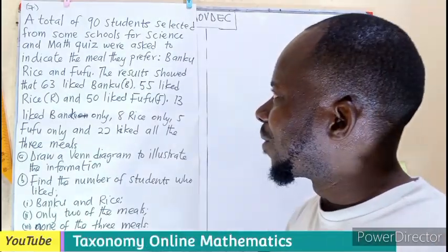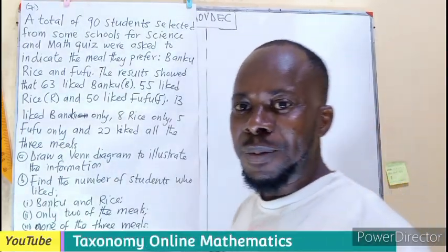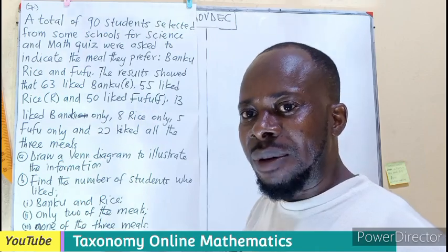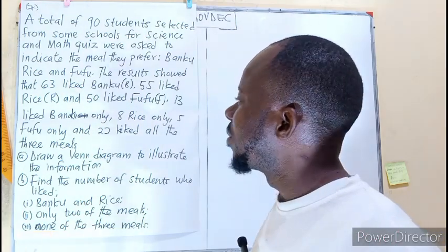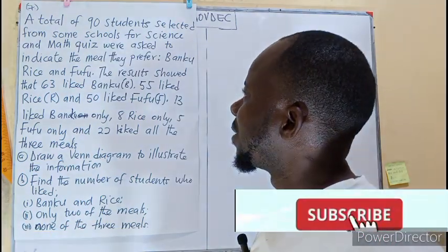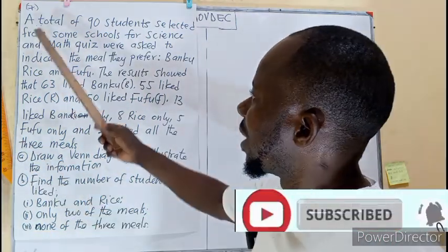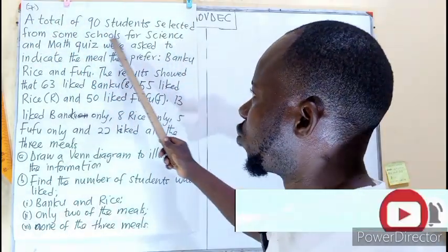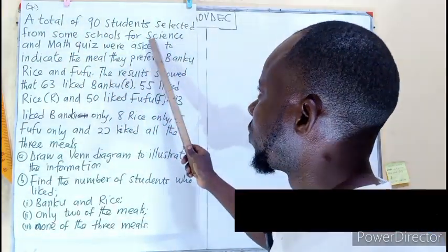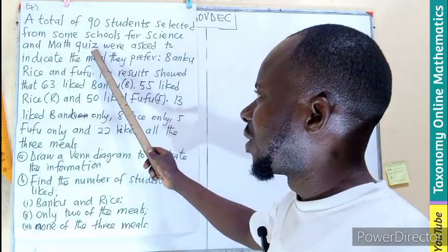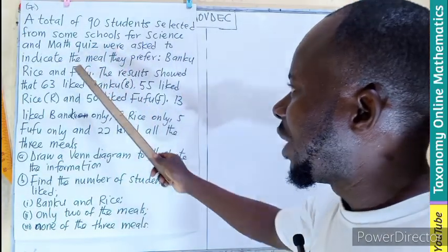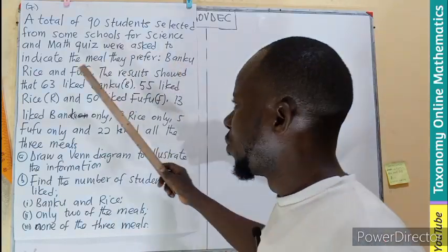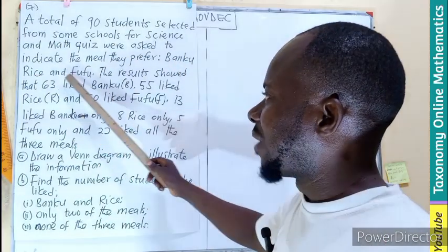Hello, welcome. Let's look at question 7 of WASI 2025 January-February edition. Here's question 7 of Commerce. A total of 90 students selected from some schools for a Science and Maths quiz were asked to indicate the meal they prefer — Bangku, Rice, and Fufu.